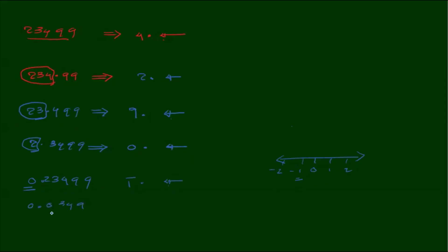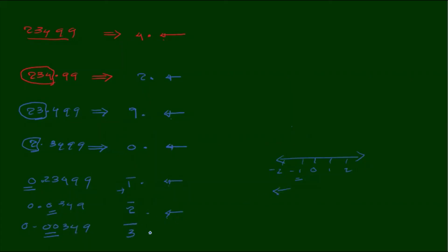0.0349 — so the characteristic here is minus 2. This is the correct teaching of this presentation. For 0.00349, the characteristic is minus 3. That is what we call digit 9, 3, 4, 9.